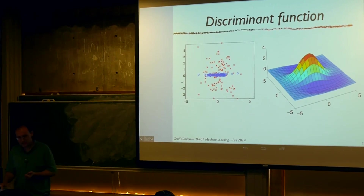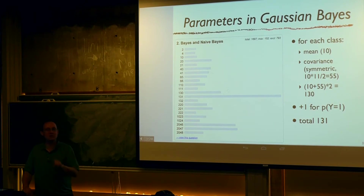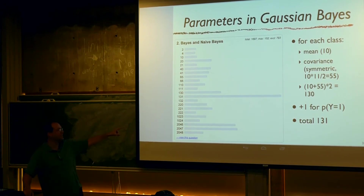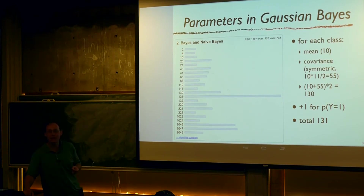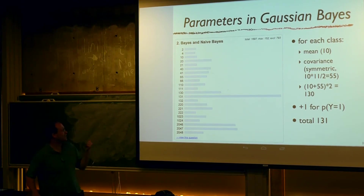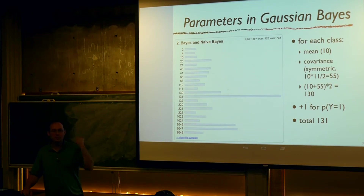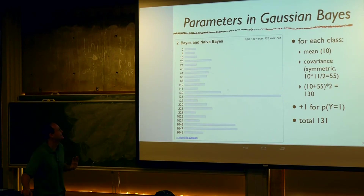The answer of 220 came from a mistake made during question design — if you forget that covariance matrices have to be symmetric, you'd get 100 parameters per covariance matrix and wind up with 221. As for the answer of 2, maybe if you believed your Gaussian distributions are completely pre-specified and you only need to learn two class probabilities, forgetting that they sum to 1. But I'm guessing there.